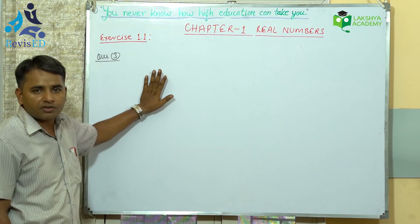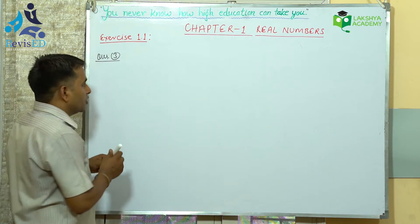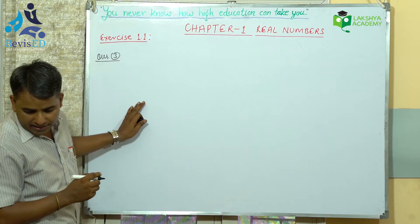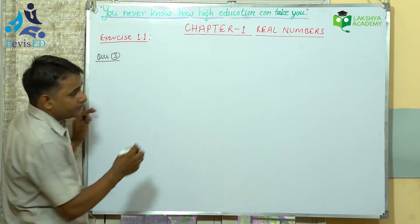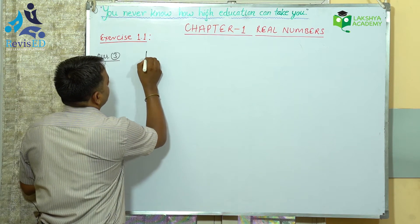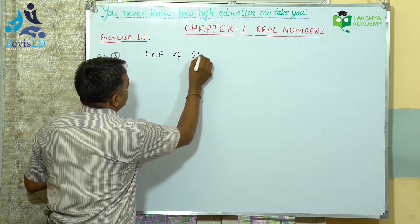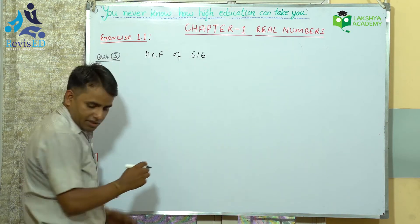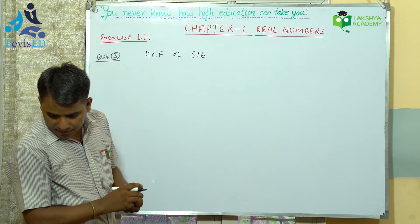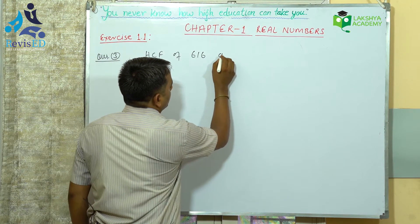So whenever there is a case of finding the maximum number, we go for the HCF. So we need to find the HCF of 616 and 32.